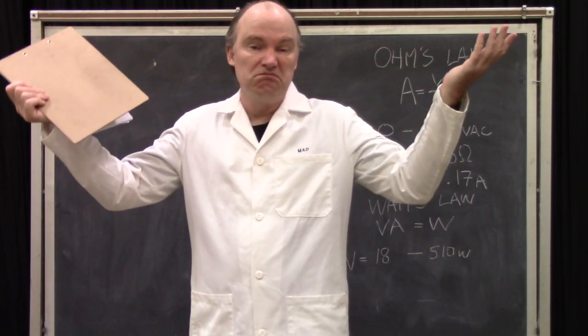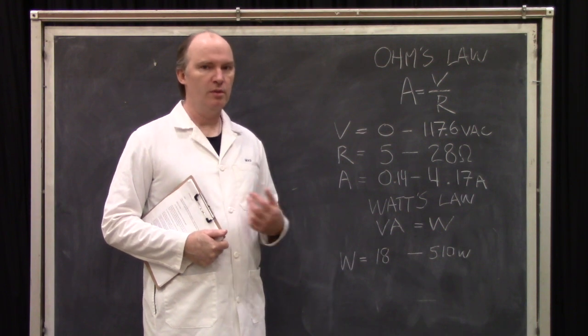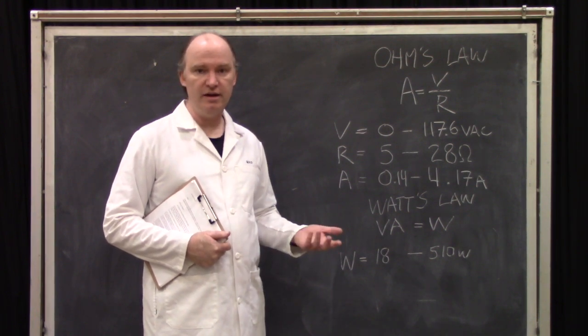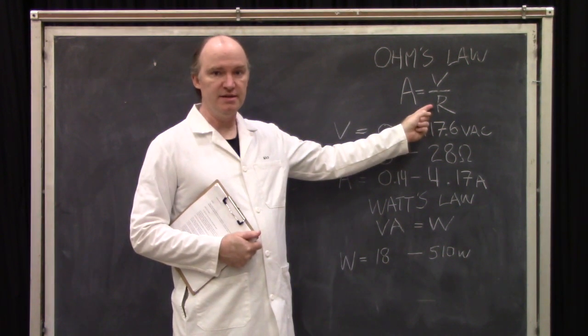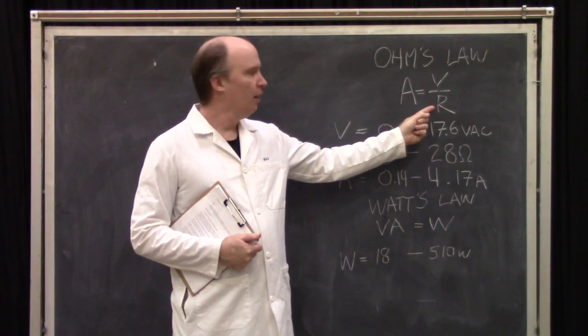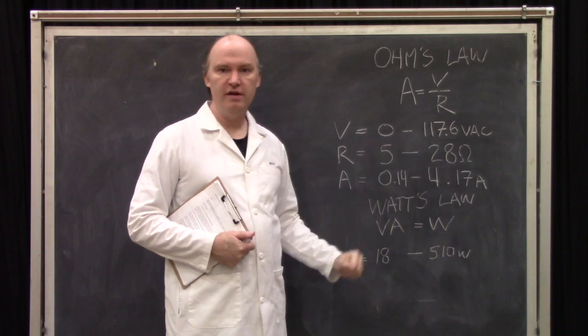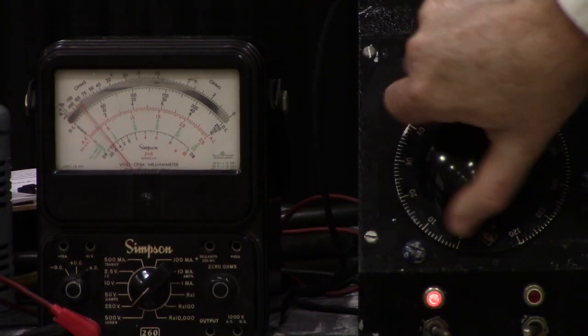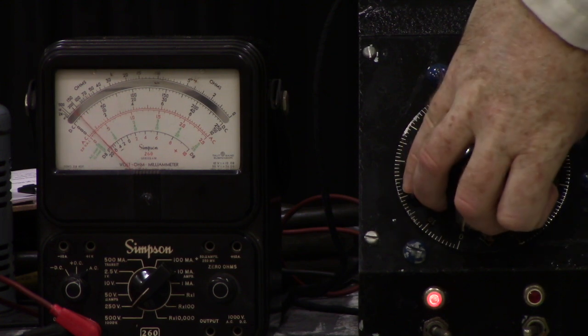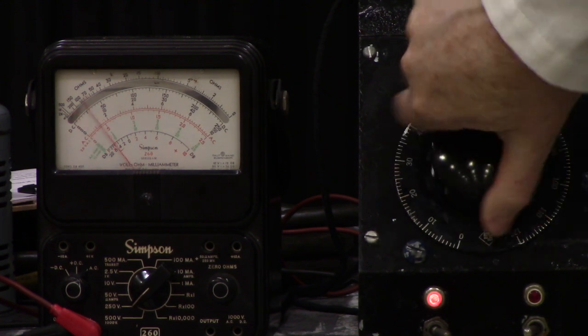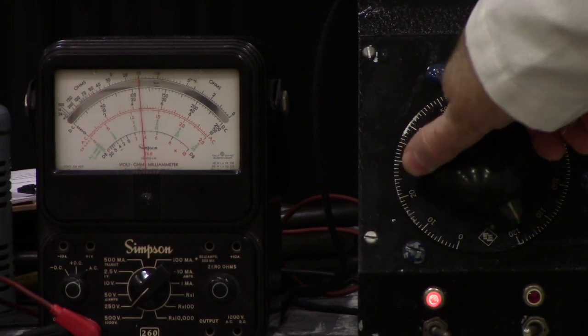Like a resistance dimmer, an auto transformer uses Ohm's Law to its advantage. However, with the resistance dimmer you were adjusting the resistance of the circuit, thus the name. With an auto transformer you're changing the voltage. Voltage goes up, voltage goes down.